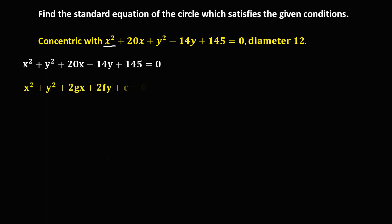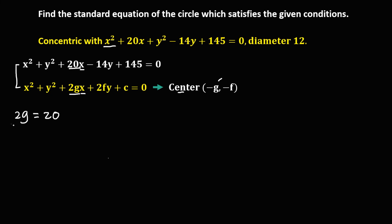From this equation, the center is at negative g and negative f. Comparing the two equations to solve for the center — first, to solve for g: since we have this x term, 2g is equal to positive 20. Dividing both sides by 2, g is equal to positive 10.